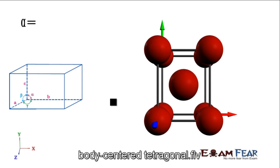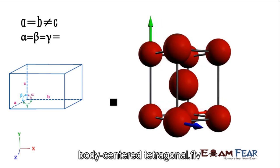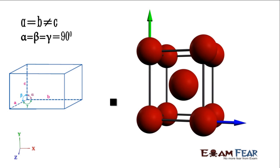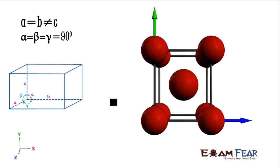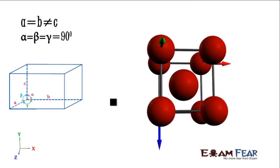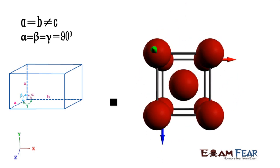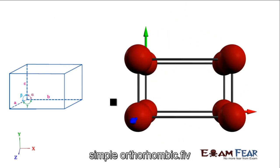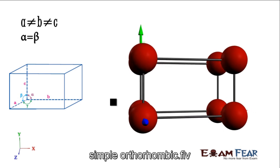The next tetragonal is the body centered tetragonal. Since it is tetragonal, two sides are equal and the third side is not equal, and all the angles are 90 degrees. There is an atom on the center of the body. There are only two types of packing for tetragonal.